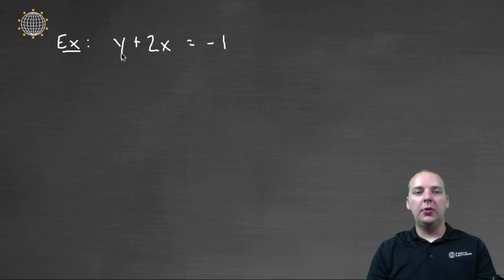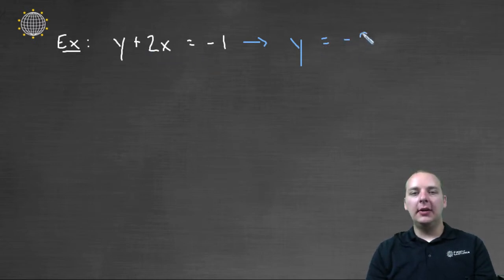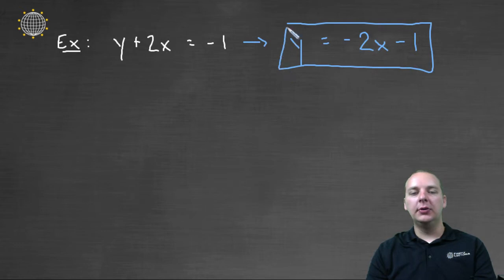Let's say we were trying to graph the linear equation y plus 2x equals negative one. Let's run through these steps real quick. Step one is to solve for y. So we'll take this and write it as y equals, we'll have to subtract the 2x to the right, y equals negative 2x minus one. So this will be the equation we're going to use for the x, y table.